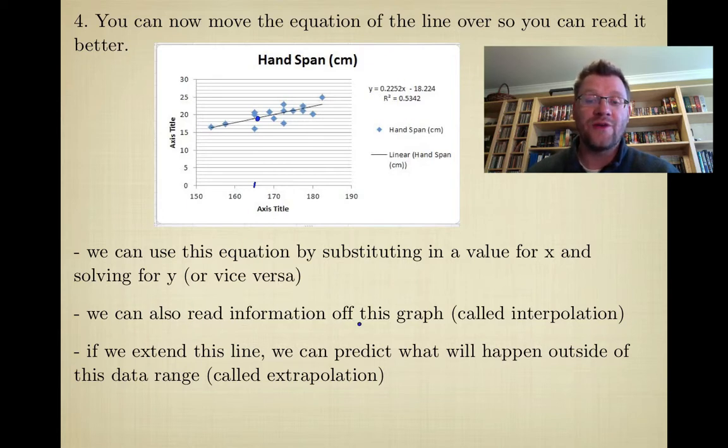You could read information off this graph and it's called interpolation. Interpolation is when you read information off the graph according to all the points that you drew. Right now this line only goes from this point over to this value here—that's because that's all the data that we gave it. So anything that you read off of this line is called interpolation.